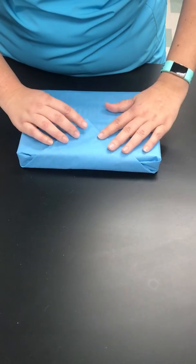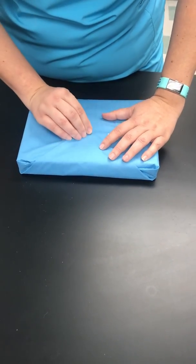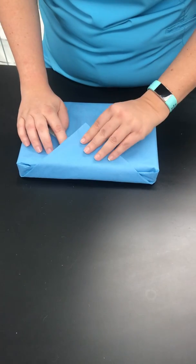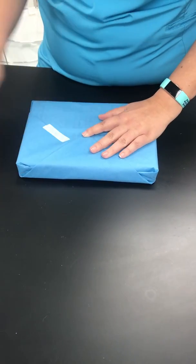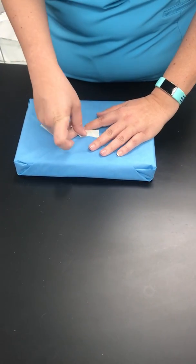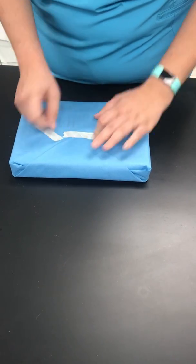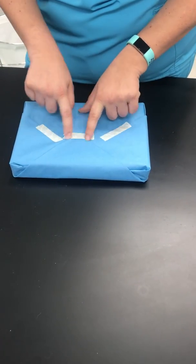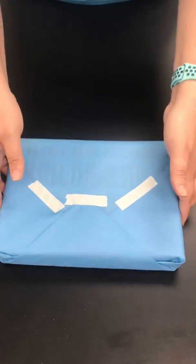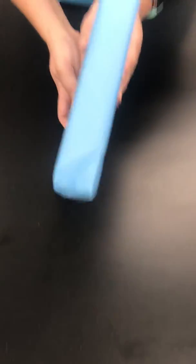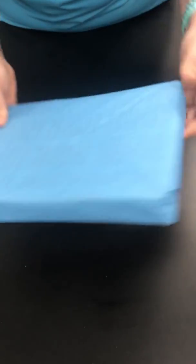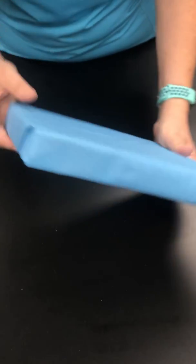So your end product for the hospital surgical wrap will look somewhat like an envelope. You want to make sure that the tape covers the entire tip of the triangle. You don't want any gaps visible.